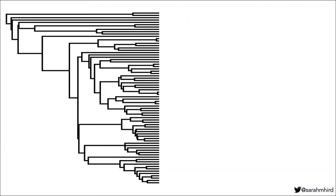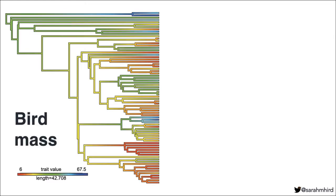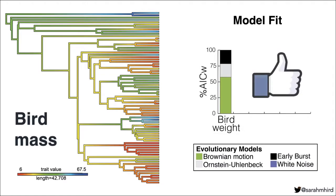The first thing we did was to see which models were supported when we analyzed bird mass — a traditional trait where based on the literature we have some expectation of which of the four models will fit. Previous work has shown that Brownian motion is a good model within bird orders, and across orders early burst is well supported. Our model support shows a mix of the models we expected: Brownian motion is supported three times stronger than either Ornstein-Uhlenbeck or early burst, and no white noise is in this support. That's roughly what we expected.